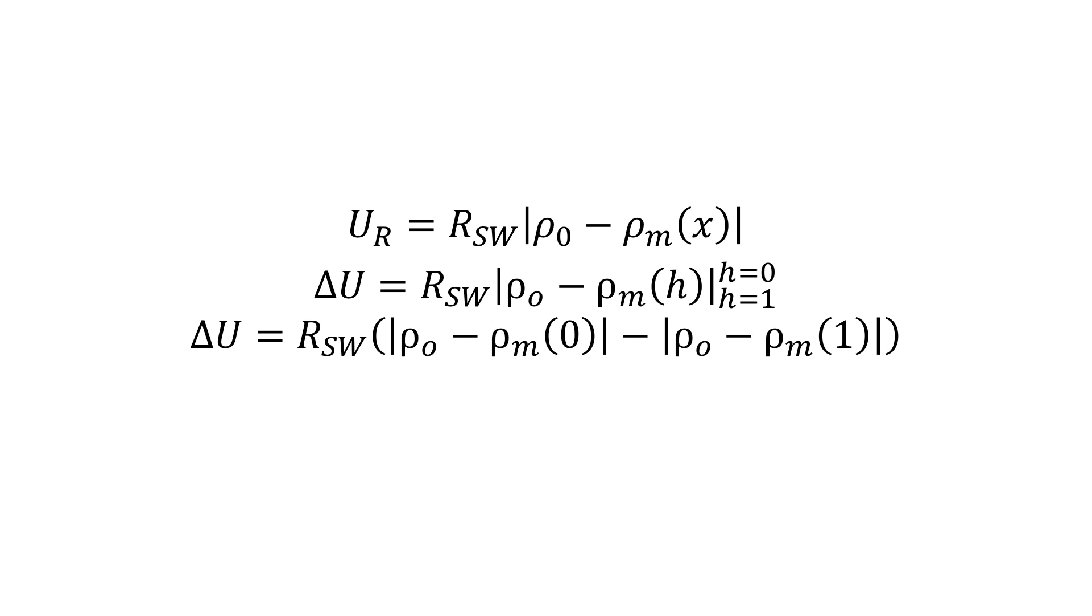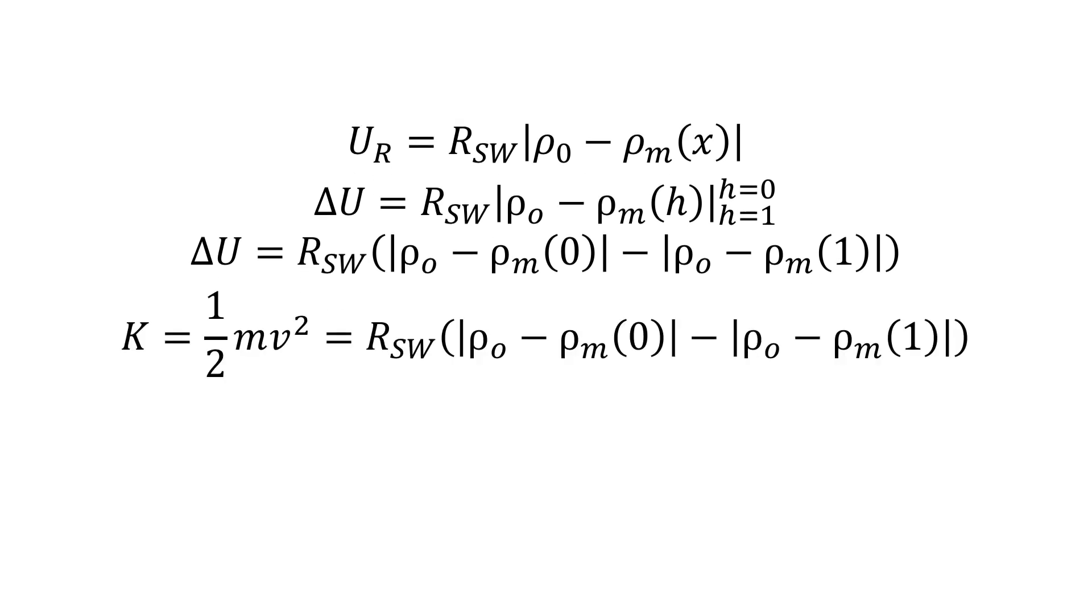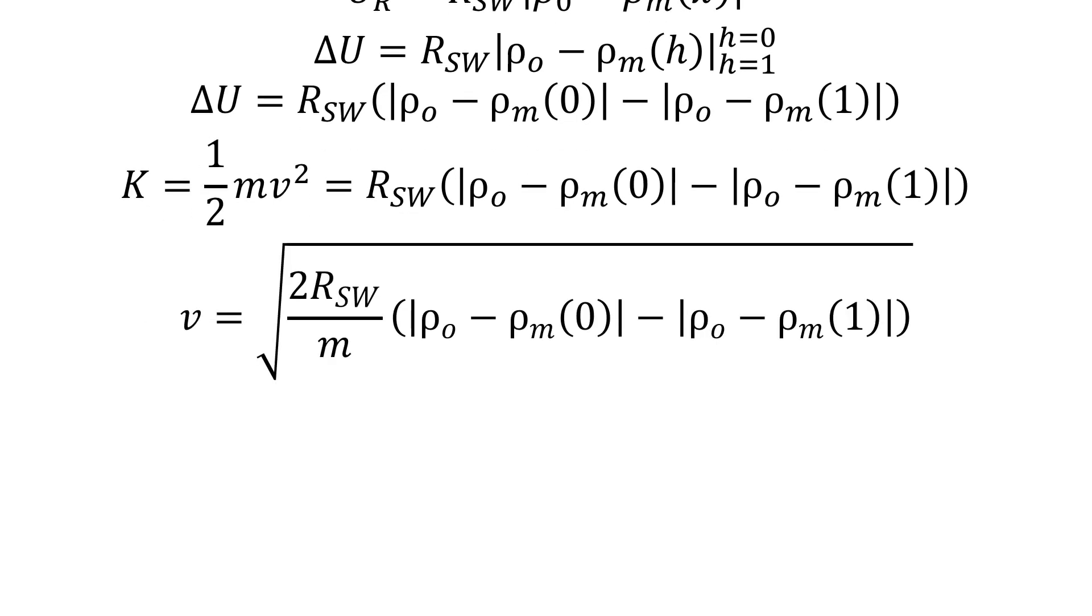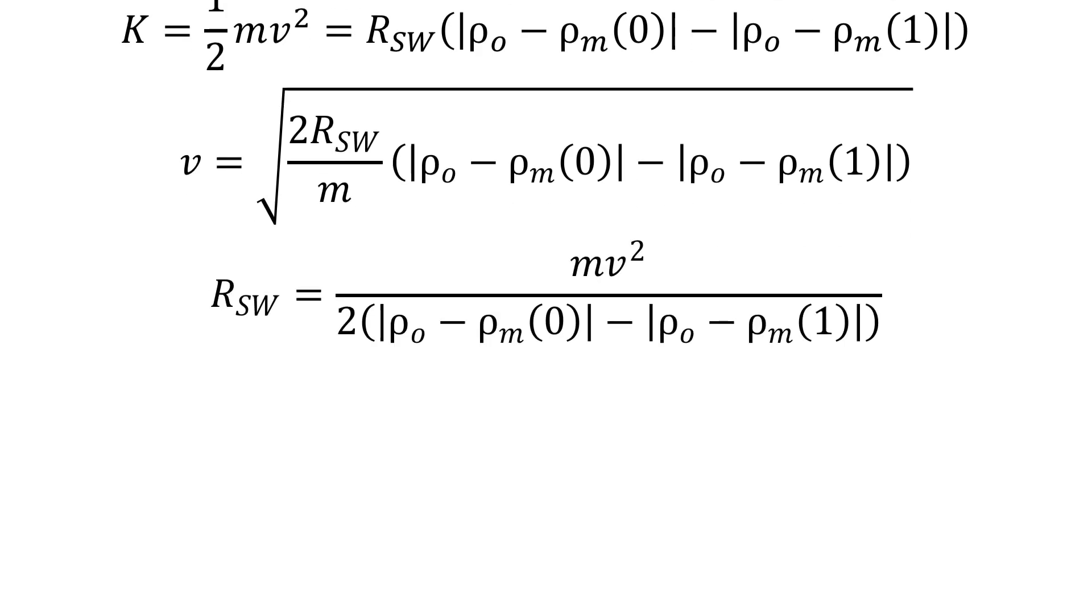Now this loss must be equal to the kinetic energy gained if we ignore air resistance. So the instant before the object hits the ground, its velocity is then this, and we could also rearrange this for the Riley coefficient.